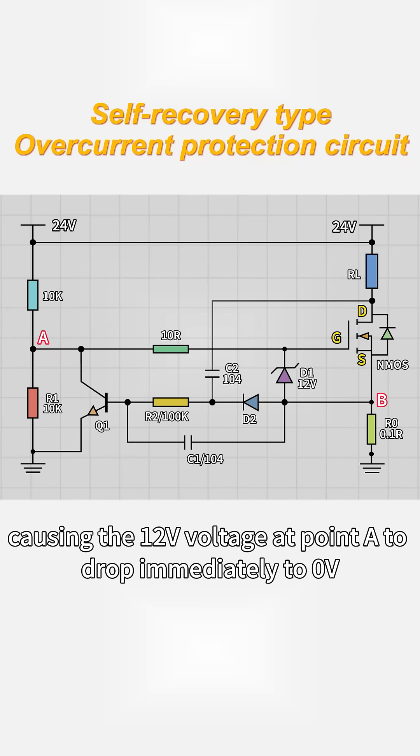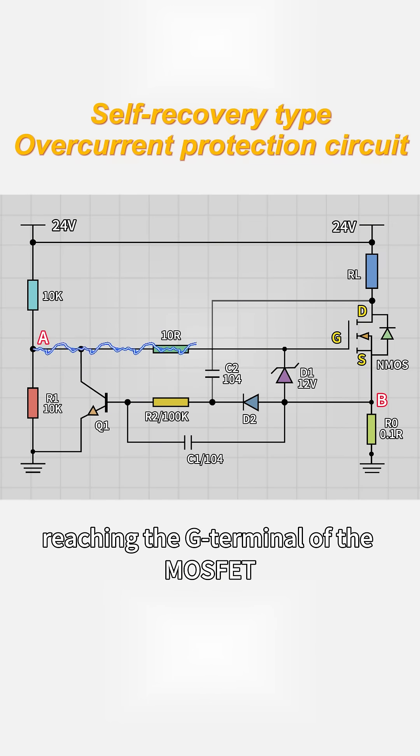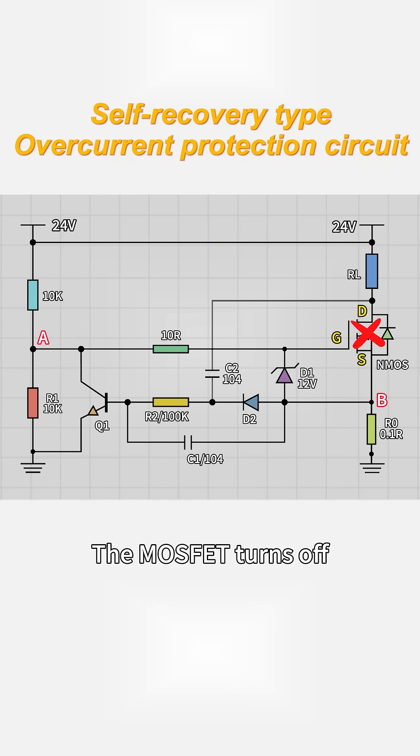The transistor then turns on, causing the 12V voltage at point A to drop immediately to 0V, reaching the G terminal of the MOSFET. The MOSFET turns off, and after this, no current flows through RL.